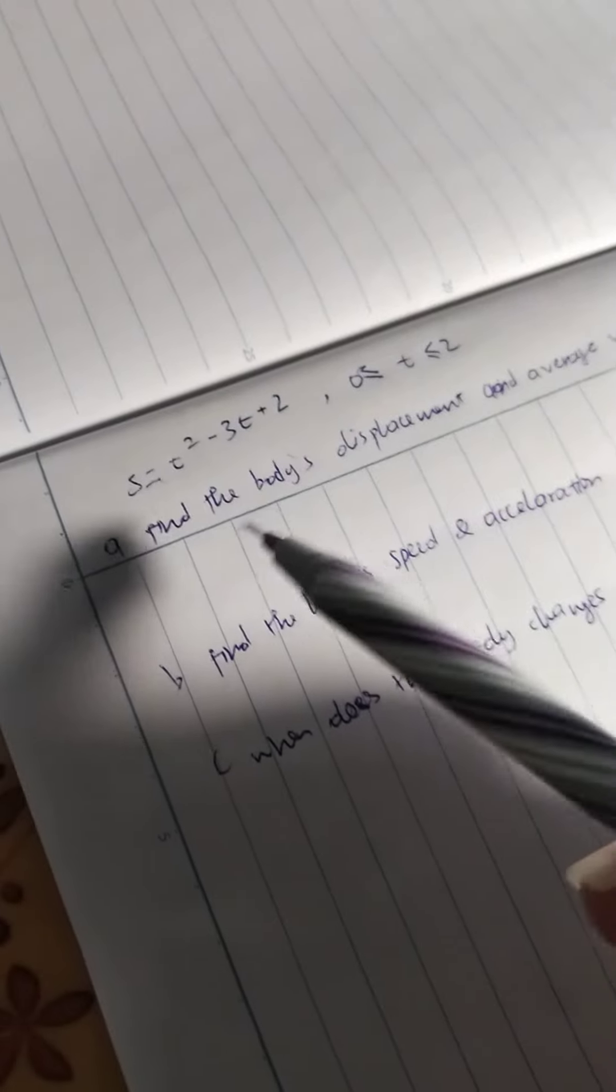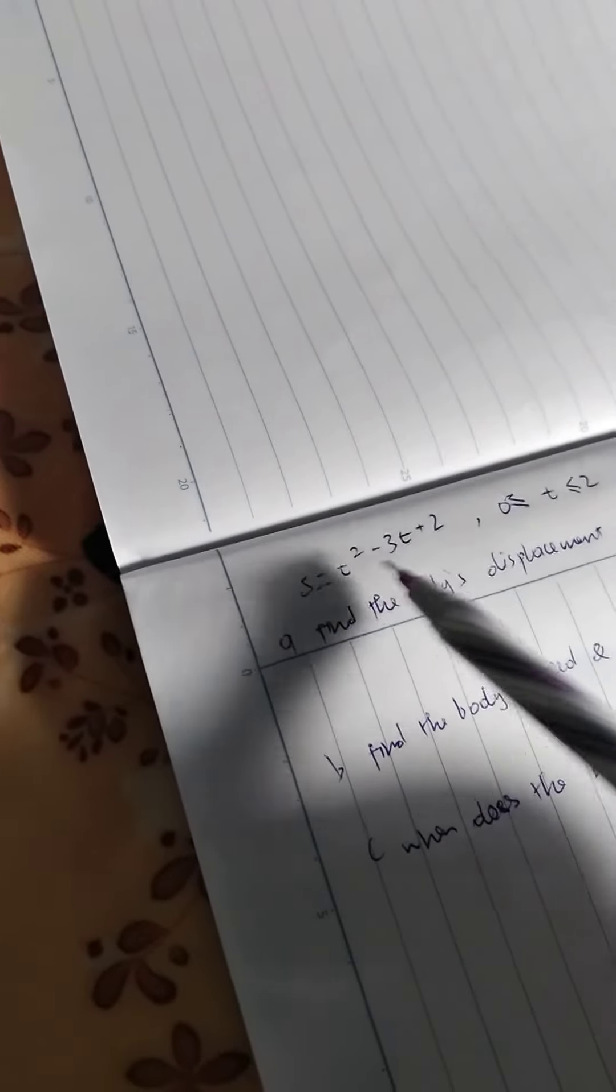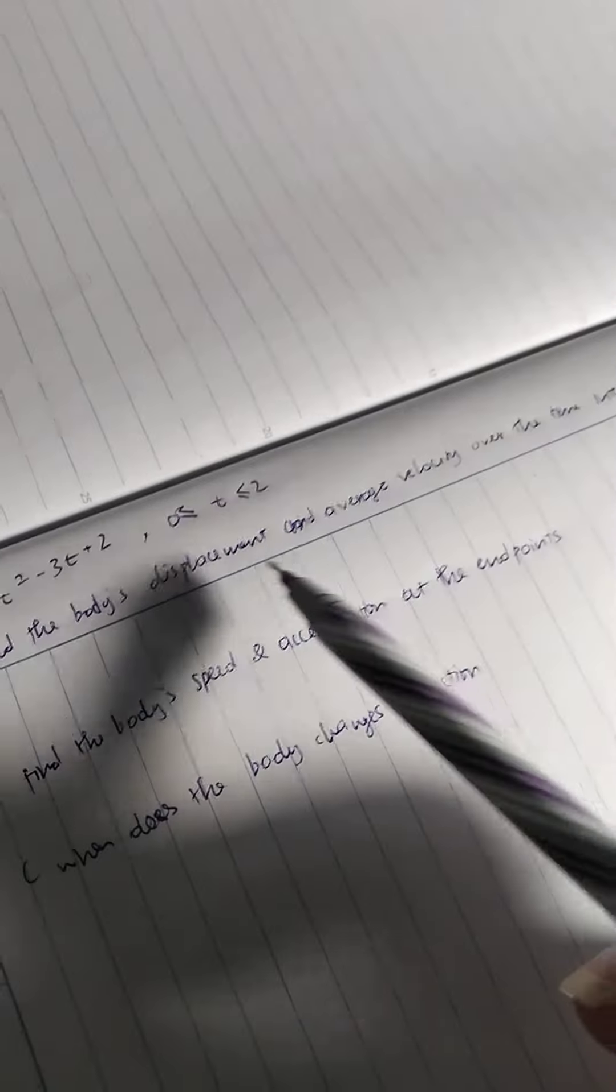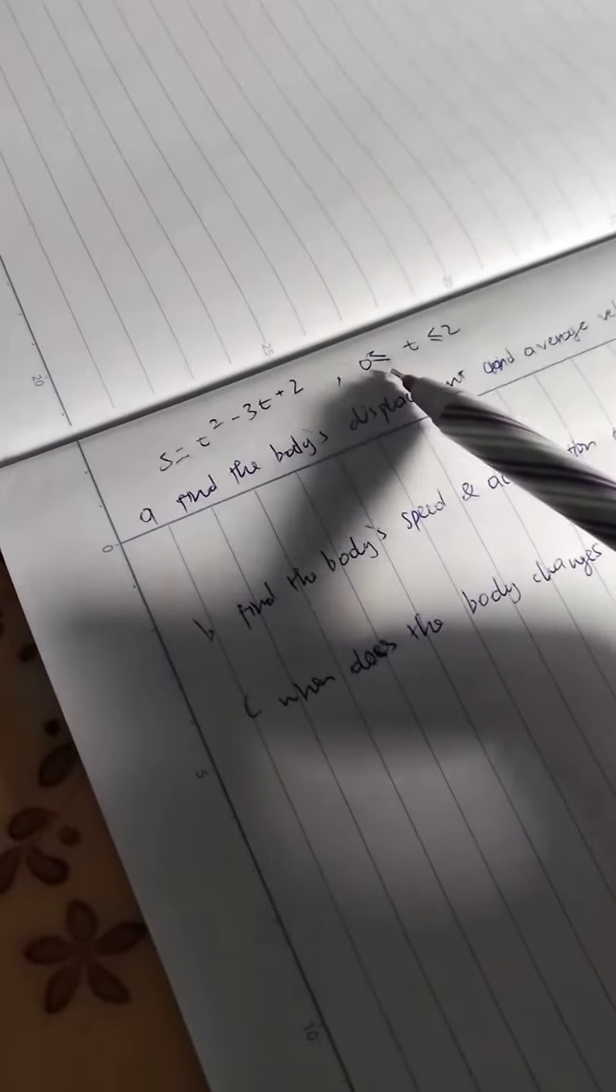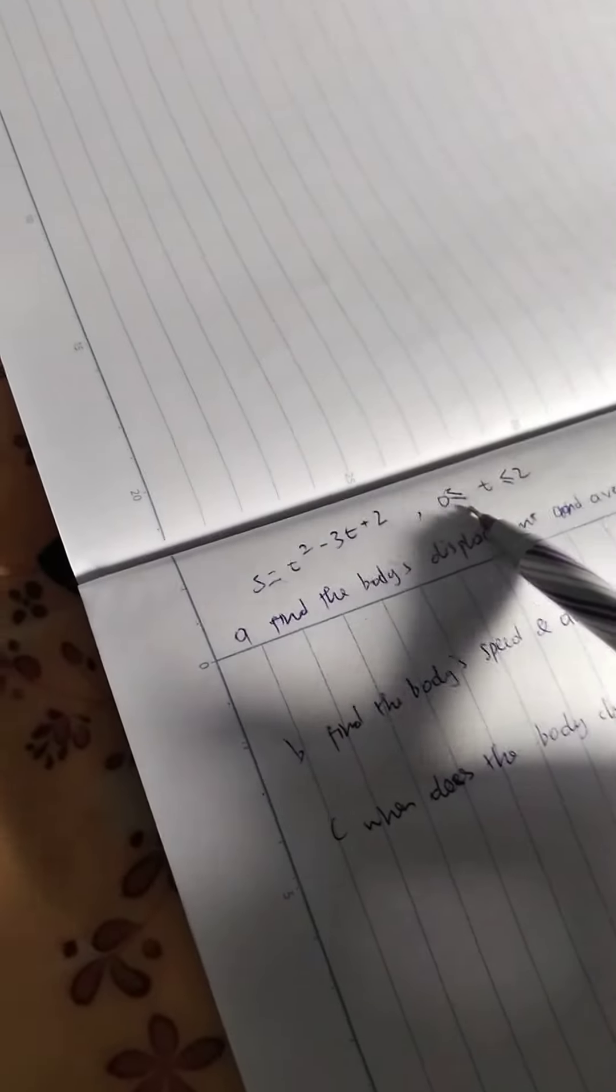First question required to find the body's displacement function. First we need to find the body's displacement average velocity over the time interval. We can see the time interval starts at zero and at two. So the interval is between zero and two seconds.